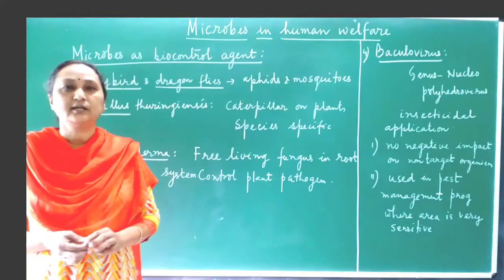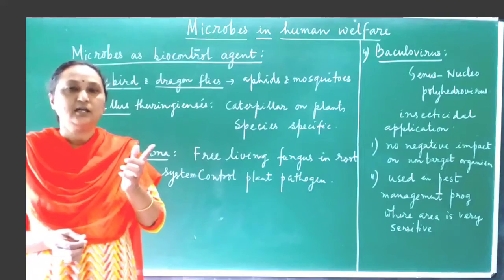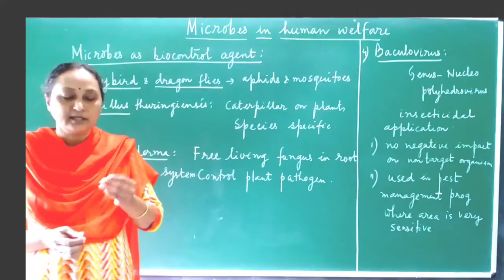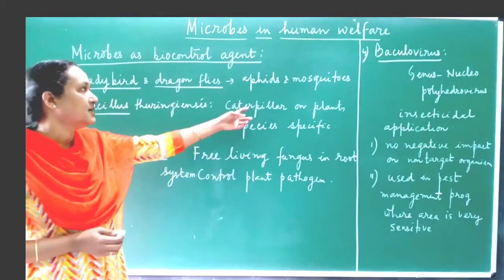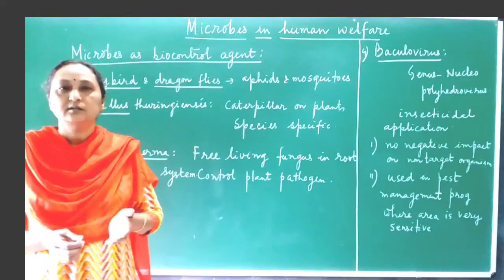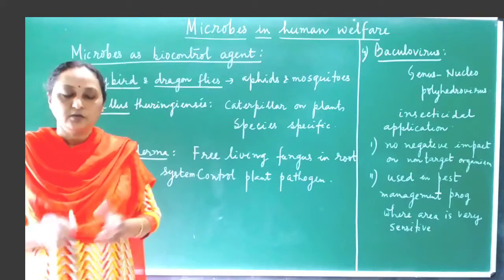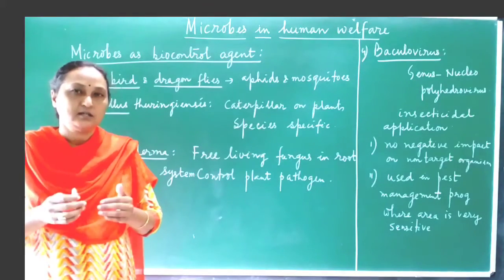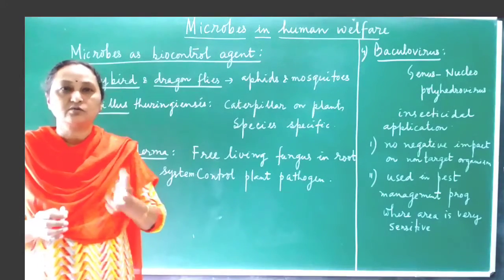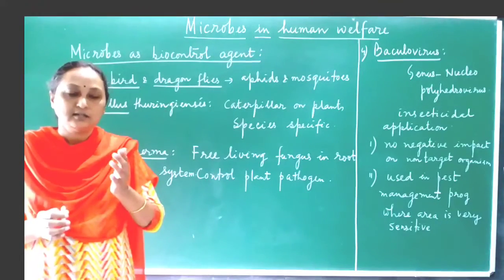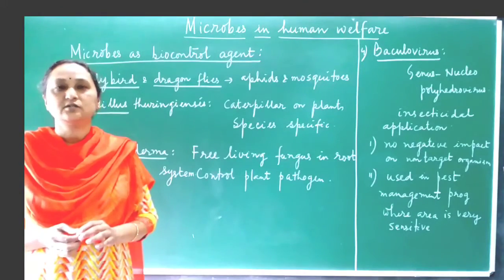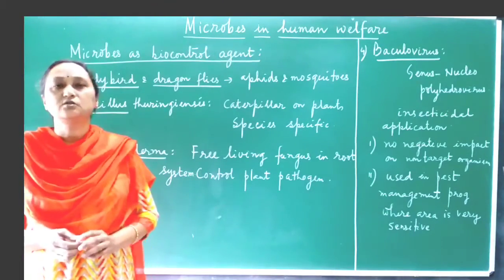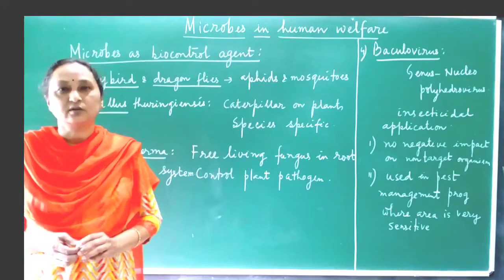The gene responsible in Bacillus thuringiensis is called the cry gene — it is a toxin-producing gene that produces Bt toxin. When this toxin enters into the alimentary canal or the gut of the caterpillar, it can destroy the caterpillar. The caterpillar is a voracious eater; it can consume a lot of leaves and destroy the crop plant. So when the caterpillar is killed by the Bt toxin produced by Bacillus thuringiensis, there is no requirement to use any pesticides or insecticides.